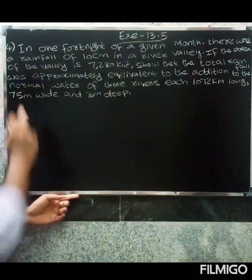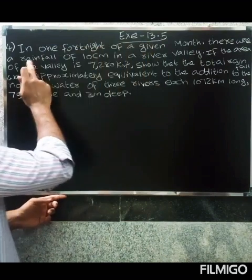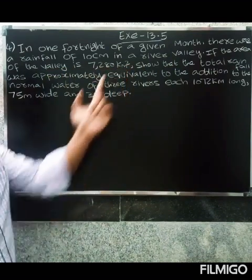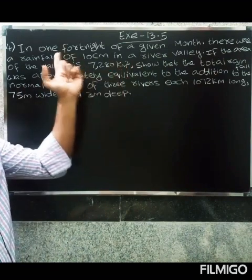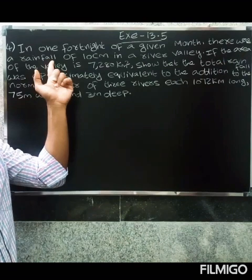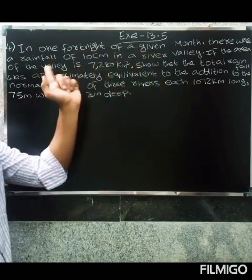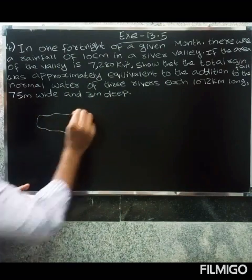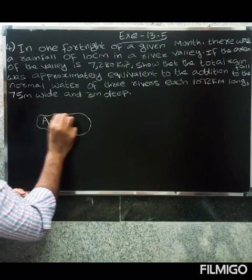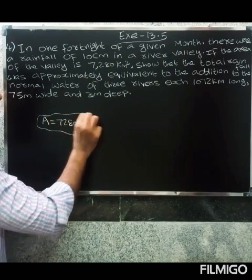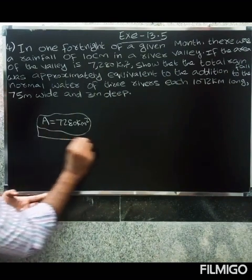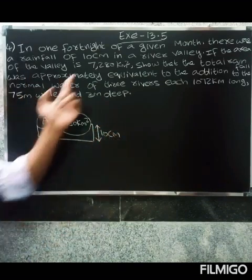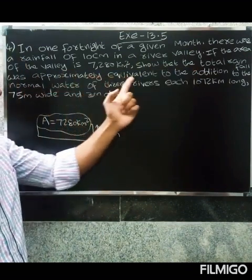Exercise 13.5. In one fortnight of a given month, there was a rainfall of 10 cm in a river valley. The area of the valley is 7,280 km². We need to show that the total rainfall in one fortnight was approximately equivalent to the addition of the normal water of three rivers.